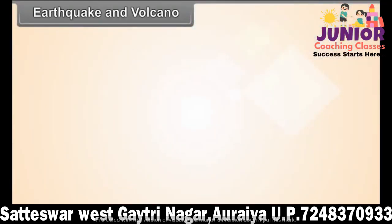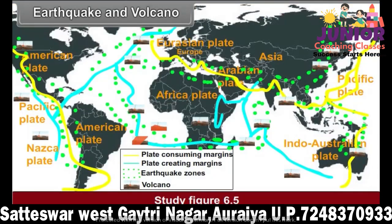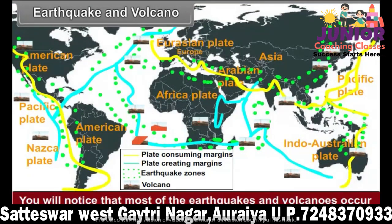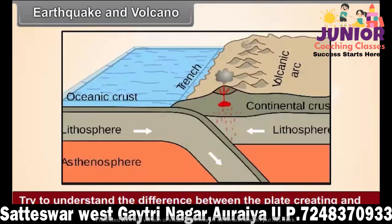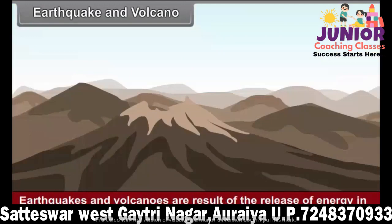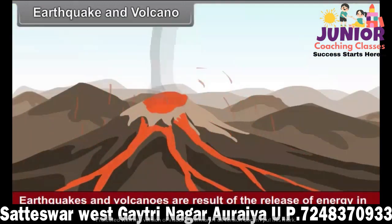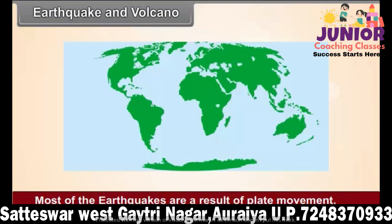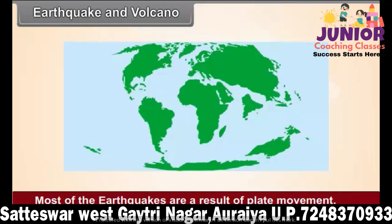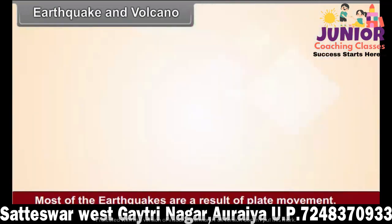Earthquake and Volcano. Study figure 6.5 — the distribution of earthquakes and volcanoes is shown in it. Most earthquakes and volcanoes occur along plate margins. Earthquakes and volcanoes are a result of the release of energy in the interior of the Earth. They occur suddenly, and most earthquakes are a result of plate movements. Earthquakes also occur when volcanic eruptions take place.